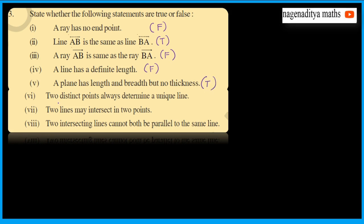'Two distinct points always determine a unique line' — this is true. 'Two lines may intersect in two points' — this is false, because two lines can only intersect at one point.